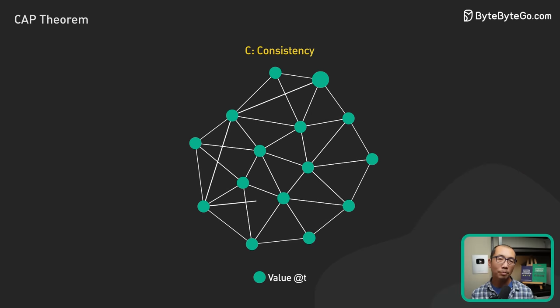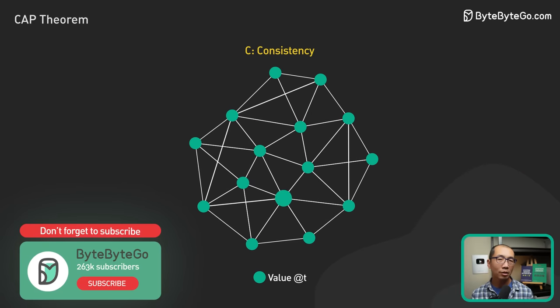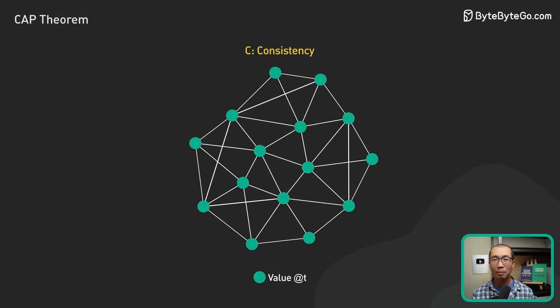Consistency refers to the property of a system where all nodes have a consistent view of the data. It means all clients see the same data at the same time, no matter which node they connect to.